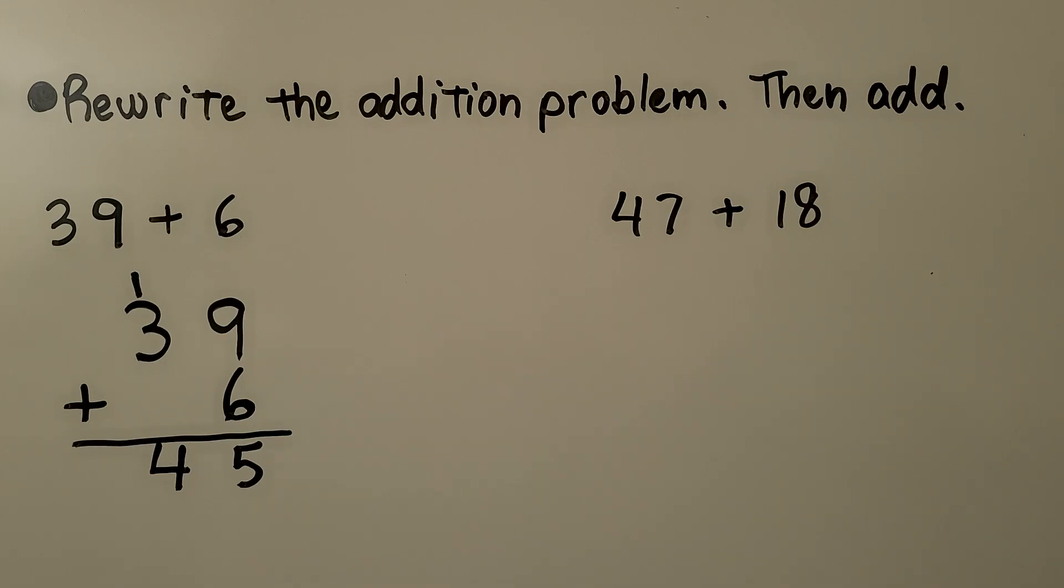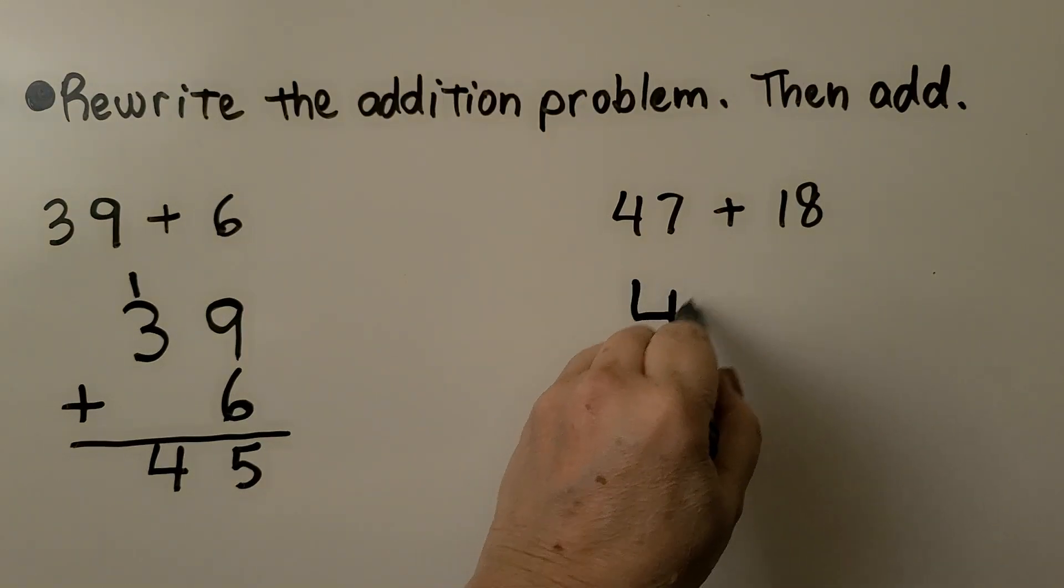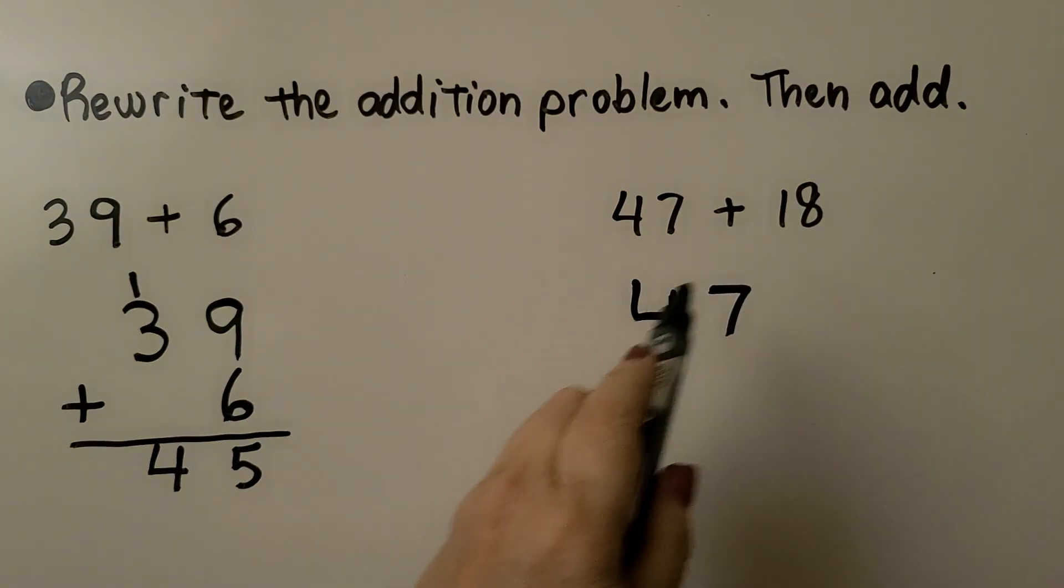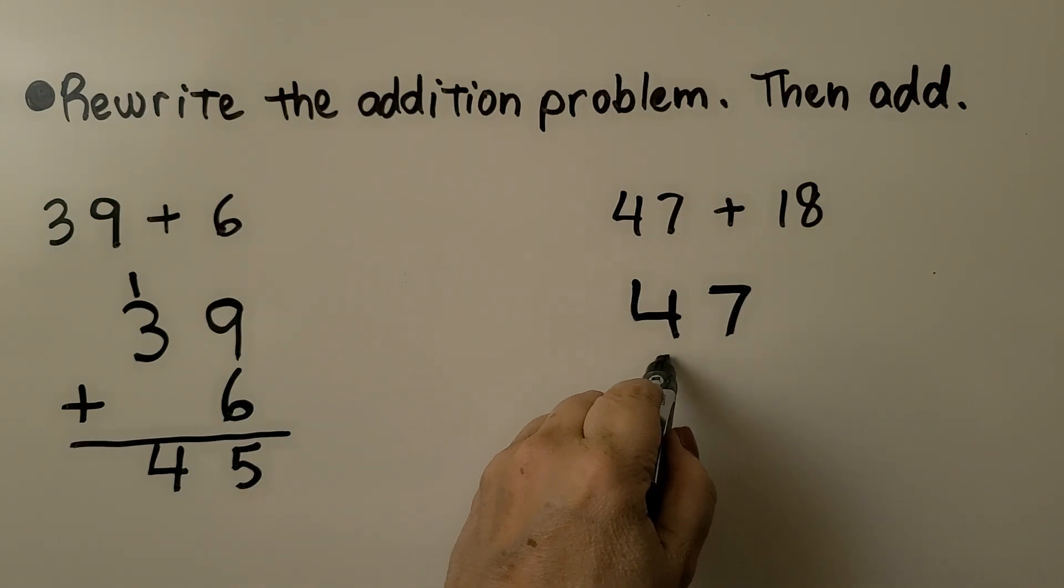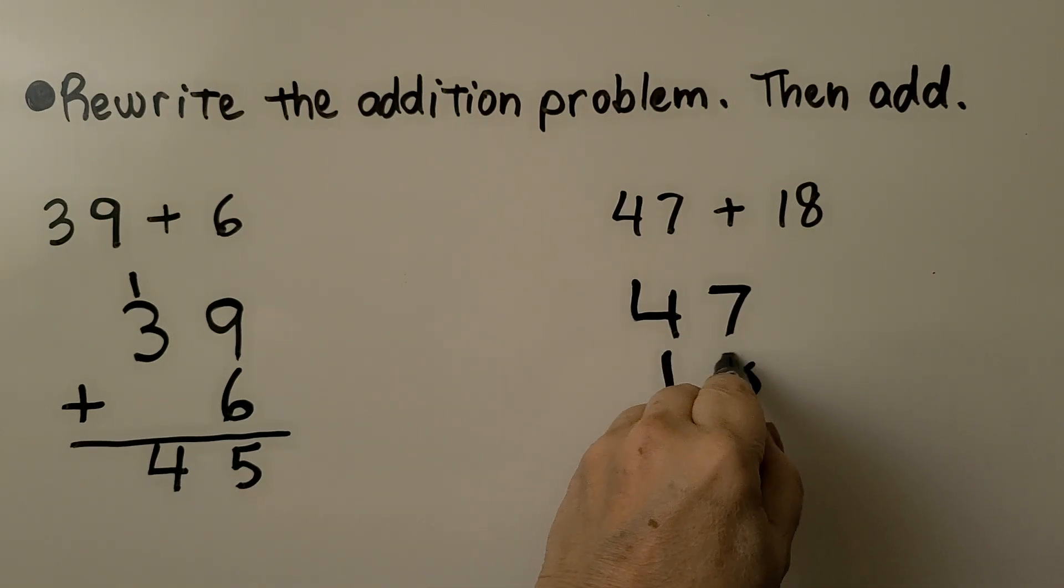Let's try it with this one. We have 47 plus 18. We write the 47. Now we write the 18 with the 1 in the tens place and the 8 in the ones place.